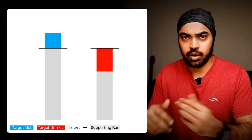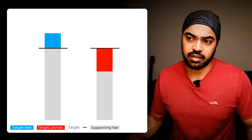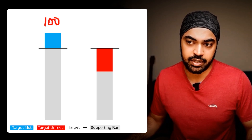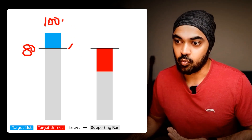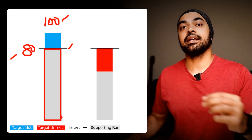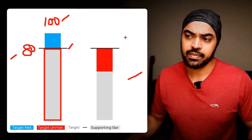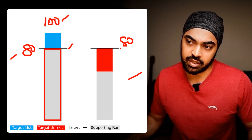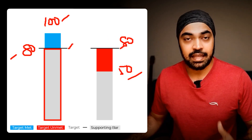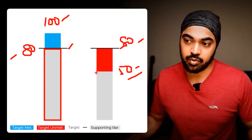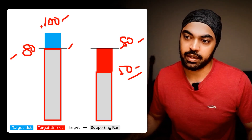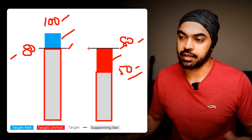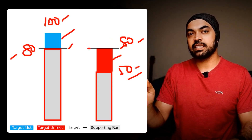The logic for the supporting bar: if sales was 100 and the target was 80, the least of the two — 80 — becomes the supporting bar height. Conversely, if the target is 80 and sales is 50, the least of the two — 50 — becomes the supporting bar height. Once we draw that supporting bar, we place either the surplus or unmet bar on top, and the target is just the target line.